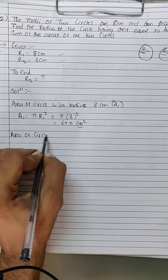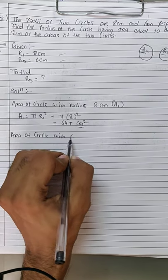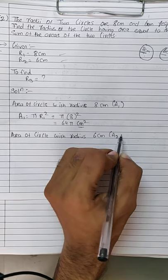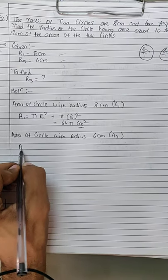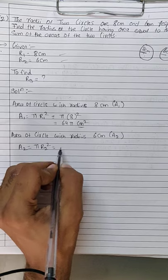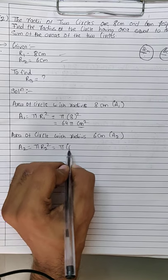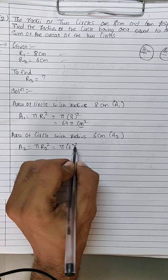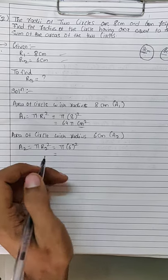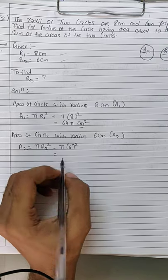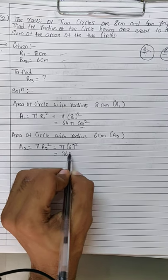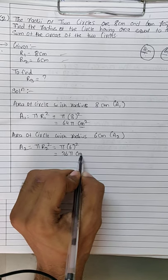Now, area of circle with radius 6 cm, let's say A2. A2 = πr2² = π × 6². 6 squared is 36, so A2 = 36π cm².